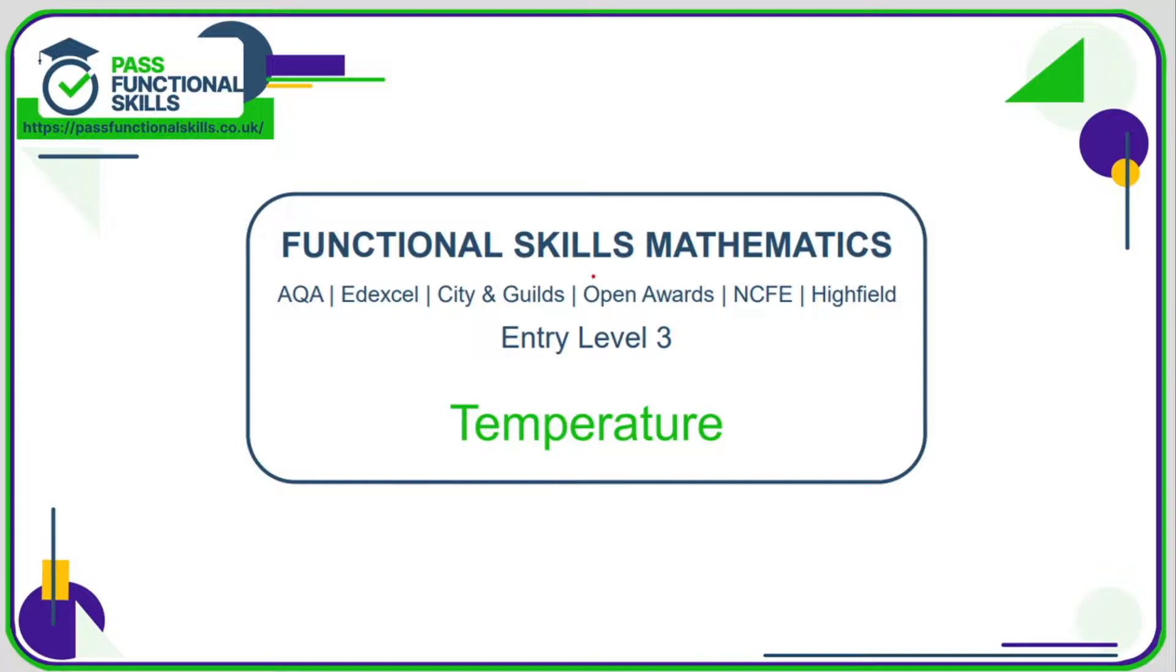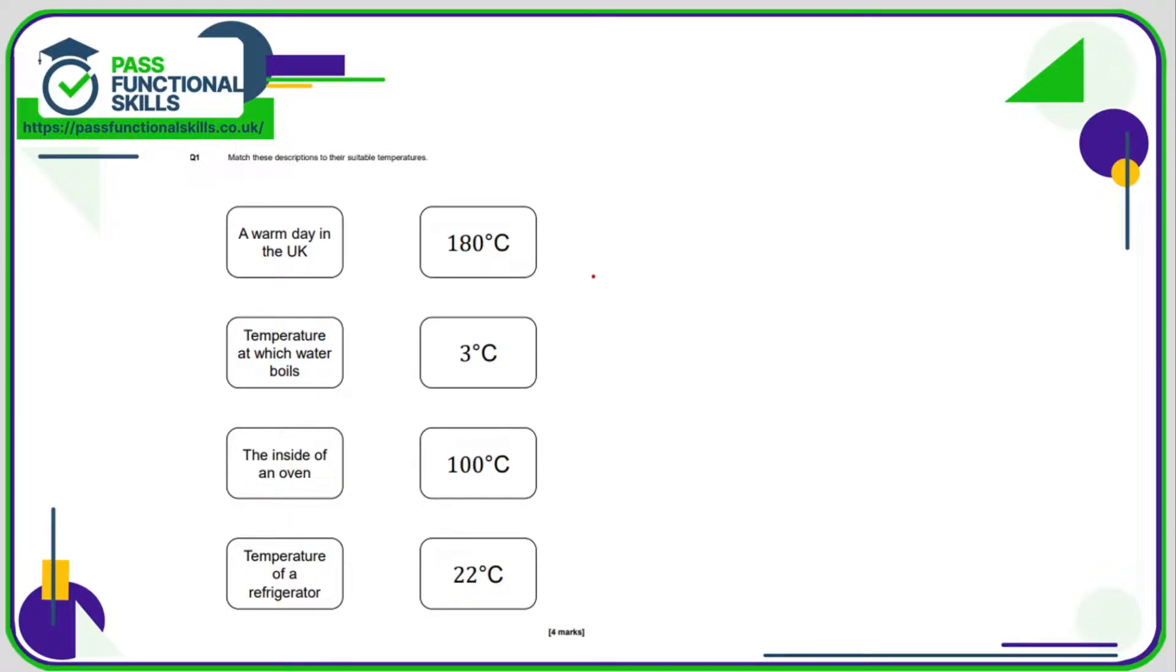Let's take a look at some temperature questions. They are all non-calculator apart from question two. Question number one: match the descriptions to their suitable temperatures. A warm day in the UK: 22 degrees would definitely be considered a warm day. Water boils at 100. The inside of an oven can vary, but 180 degrees is a reasonable temperature. And a refrigerator would be obviously much lower, so 3 degrees.